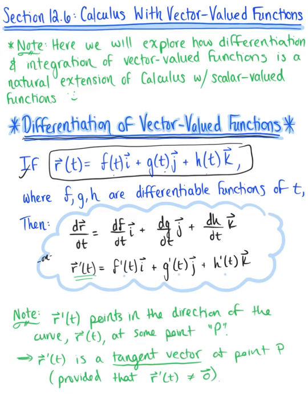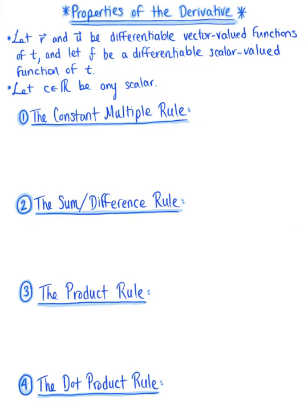Let's go ahead now and explore some of the differentiation rules and properties of vector-valued functions. Most of those differentiation rules we know from Calculus 1 are going to hold true for vector-valued functions, and we also have a few new ones. To begin, let vector r and vector u be differentiable vector-valued functions of t, let f be a differentiable scalar-valued function of t, and let c be any scalar.